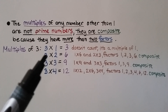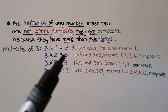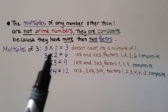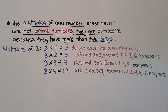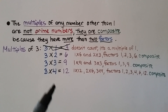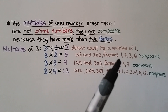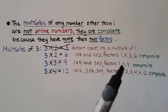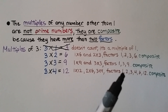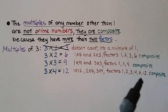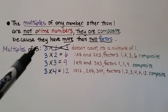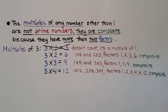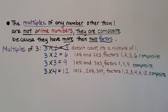For multiples of 3: we get 3, 6, 9, and 12, but 3 times 1 equals 3 doesn't count since it's a multiple of 1. That leaves us with 6, 9, and 12. 6 has factors 1, 2, 3, and 6 — more than 2, so composite. 9 has factors 1, 3, and 9 — composite. And 12 has factors 1, 2, 3, 4, 6, and 12 — composite. So the multiples of any number other than 1 are not prime; they're composite because they have more than 2 factors.